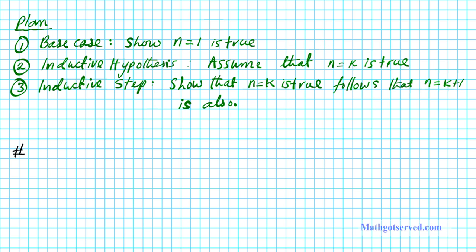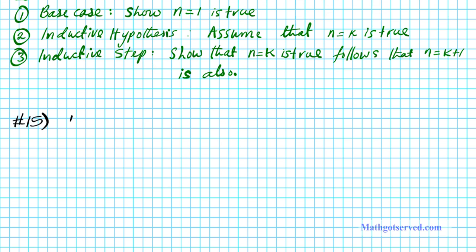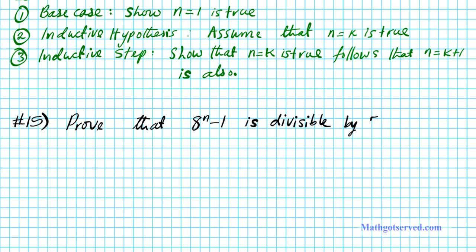So let's go ahead and take a look at the problem. We are to prove that 8 to the n minus 1 is divisible by 7 for all positive integers. This is the same thing as the set of natural numbers.